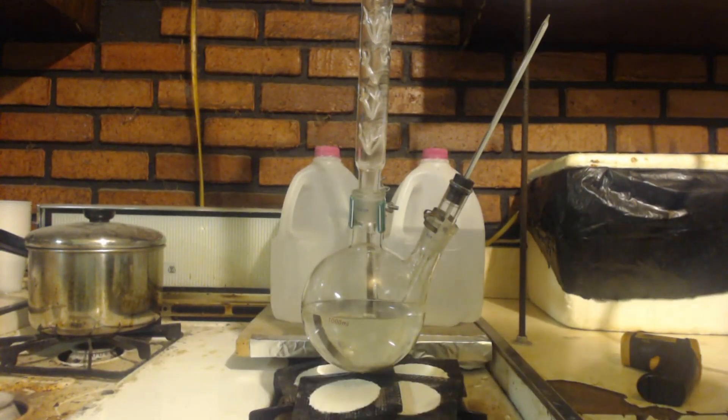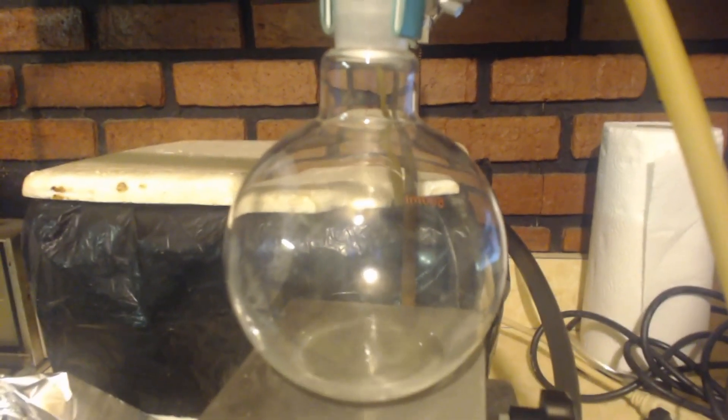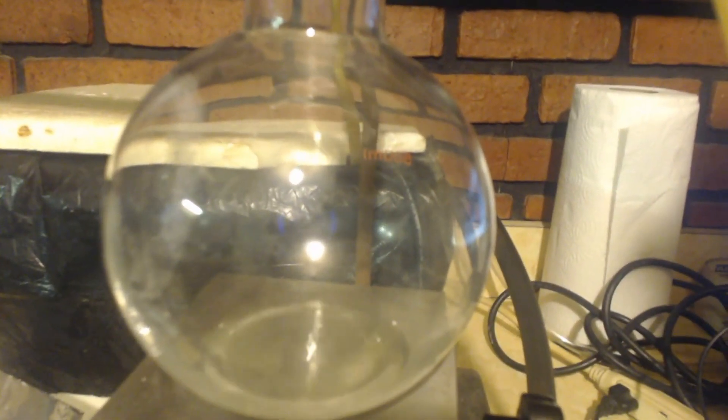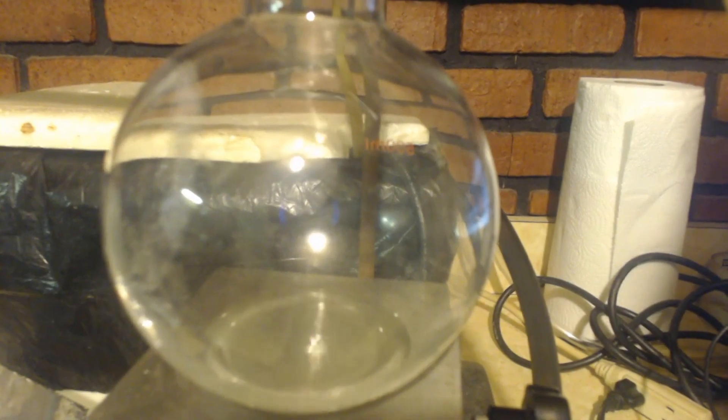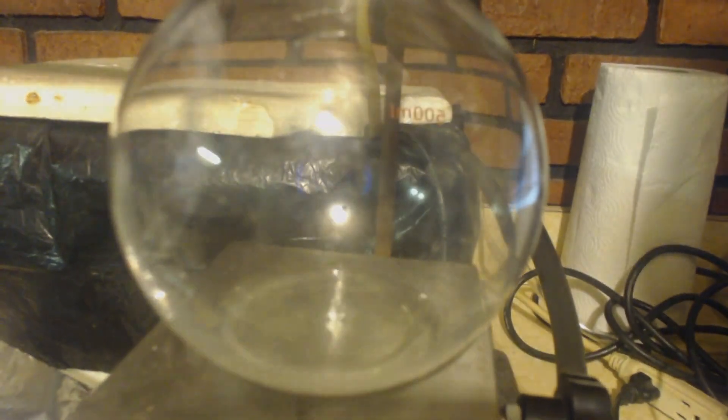You can see over here is the collection flask. First, I'm going to distill up the ether. So there's the receiving flask. You can see it dripping. I'm trying to slow it down. It's actually coming over too fast, but I figure there's a lot of ether going a little fast won't hurt it that much.